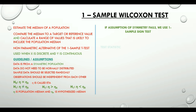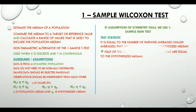The test statistic for a one sample Wilcoxon test is equal to the number of pairwise averages, or Walsh averages, that are greater than the hypothesized median, plus half of the number of paired averages that are equal to the hypothesized median. Walsh averages, or pairwise averages, are the means of each possible pair of values in your data set, including the pair of each value with itself.